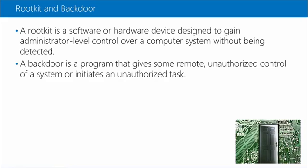A rootkit is software or a hardware device used to gain administrative-level access to a system without being detected. A backdoor is a program that gives some remote, unauthorized control of a system or initiates an unauthorized task without user intervention — essentially giving someone the ability to remotely access your system and have it perform tasks.